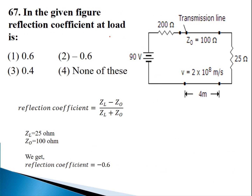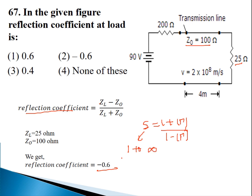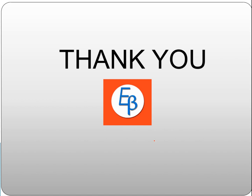The last question involves a transmission line. Calculate the reflection coefficient at the load. The expression is Γ = (ZL - Z0)/(ZL + Z0). Given ZL = 25 Ω and Z0 = 100 Ω, the reflection coefficient = (25 - 100)/(25 + 100) = -75/125 = -0.6. Standing wave ratio (SWR) = (1 + |Γ|)/(1 - |Γ|), with range 1 to infinity. Reflection coefficient range is 0 to 1. This concludes Part 5 of the DMRC JE Electronics 2016 series.